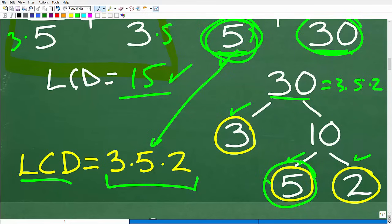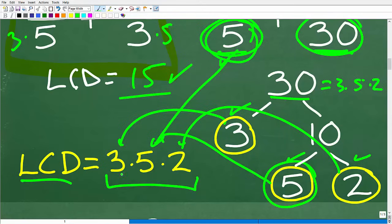But we need a 3, okay? That's a prime factor of 30. And we also need a 2. That's a prime factor of 30. So 3 times 5 times 2 is the LCD. Of course, this is 15 times 2 or 30. Okay, so if you're a little bit confused on how to find the LCD, well, this is basic arithmetic. A lot of people are.